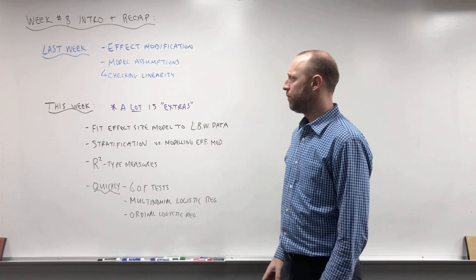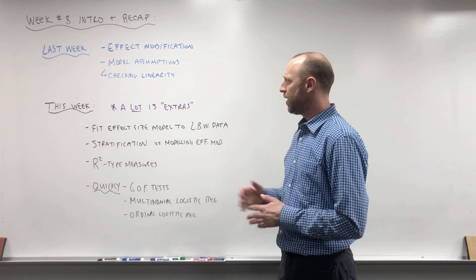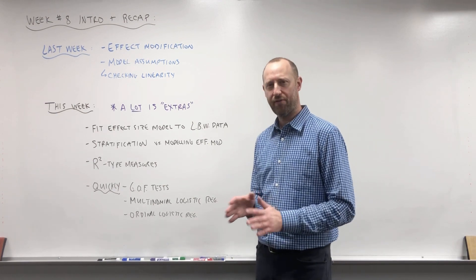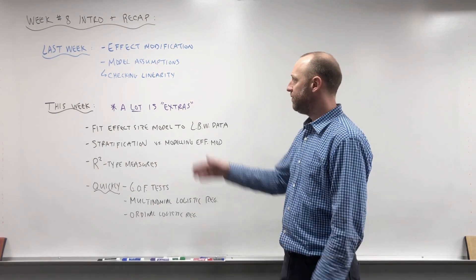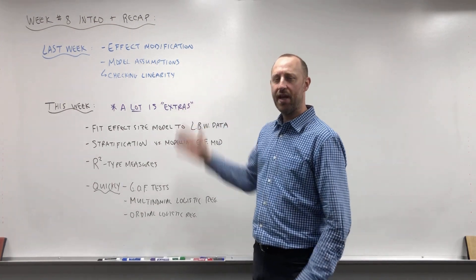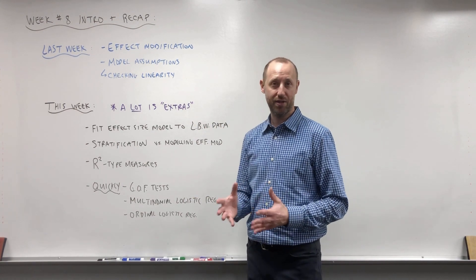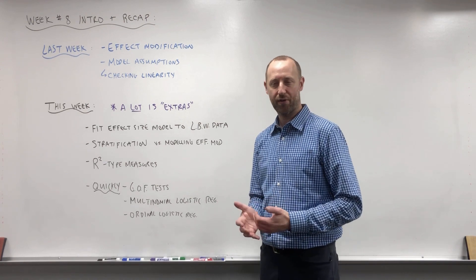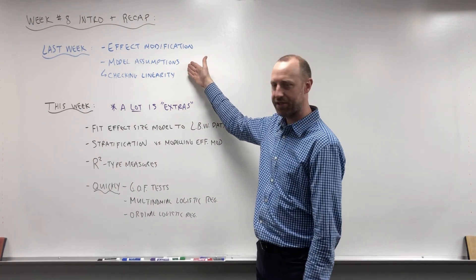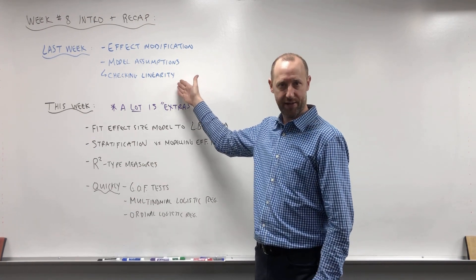Previously we were looking at logistic regression models. A couple weeks ago we built up the model and talked about confounding and mediation. Last week we looked at effect modification — when it's included in the model, how we can work with it, and how we can calculate the odds ratios under effect modification. Then we talked about the assumptions of a logistic regression model and how we can check the linearity assumption.